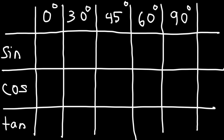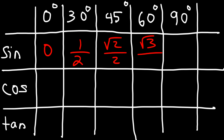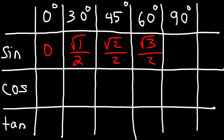Sine of 0 is 0. Sine 30 is 1 over 2, or you could say square root of 1 over 2. Sine 45 is square root 2 over 2. Sine 60 is square root 3 over 2. And sine 90 is square root 4 over 2 — square root 4 is 2, and 2 divided by 2 is 1. Notice the pattern: I'll replace this with a 1 and remove the square root symbol from the others.